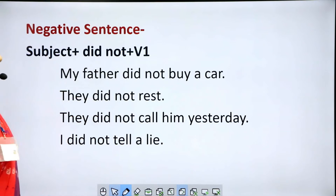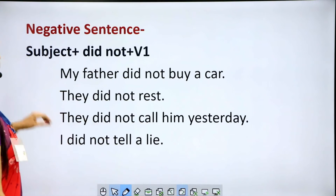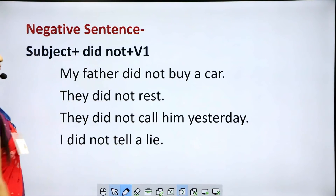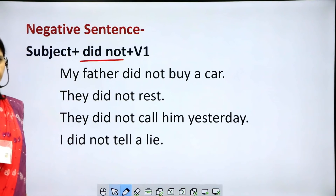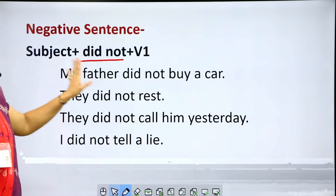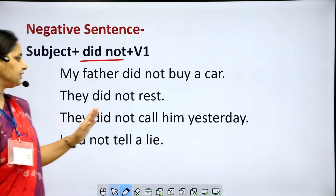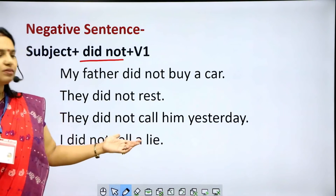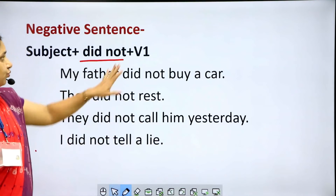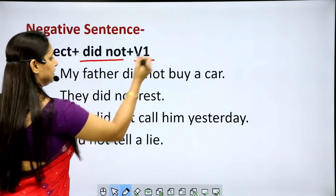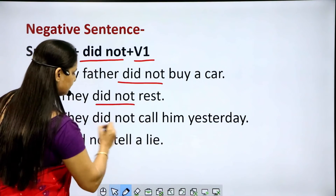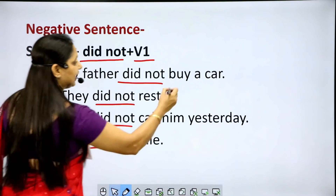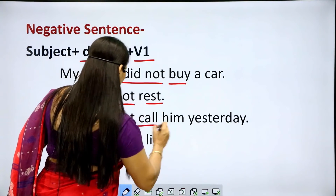Negative sentences in the simple past tense: subject plus 'did not' plus V1. We use the helping verb 'did'. Examples: 'My father did not buy a car.' 'They did not rest.' 'They did not call him yesterday.' 'I did not tell a lie.' We use 'did not' in all sentences and then the first form of the verb: buy, rest, call, tell.